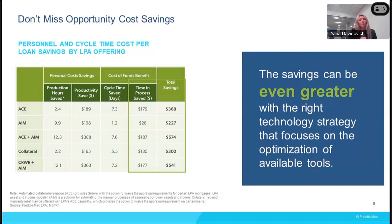Additionally, effective use of technology tools can help lenders process loans faster, which in turn can reduce the cost of carrying funds. Based on our latest annual assessment of mortgage cycle time, Freddie Mac digital offerings can produce between one to eight days in savings in closing cycle time, which translates into cost savings of up to $190 per loan. The savings can be even greater with the right technology strategy that focuses on optimization and maximization of available tools.